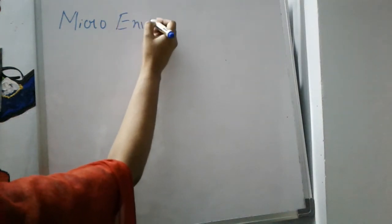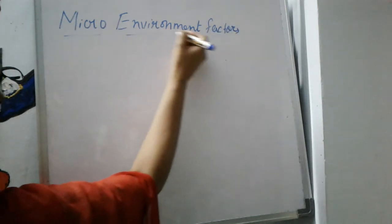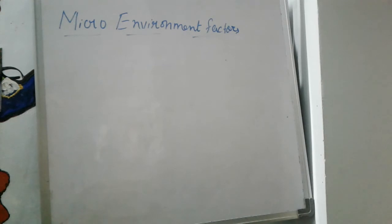Hello students, in today's class we are going to continue our topic, that is the types of marketing environment. So I have told you in the previous class about the types of marketing environment and micro environment factors. There are six micro environment factors affecting marketing.